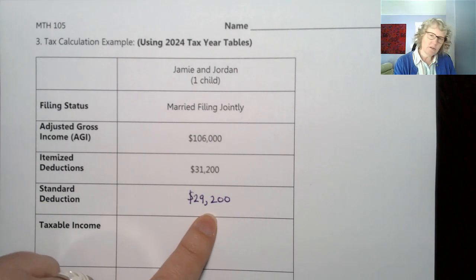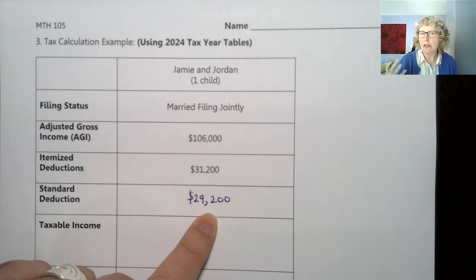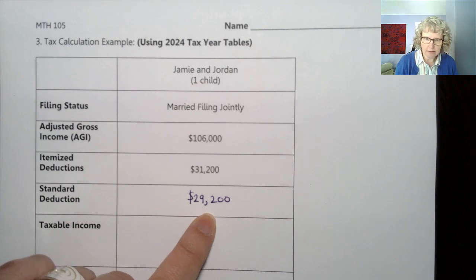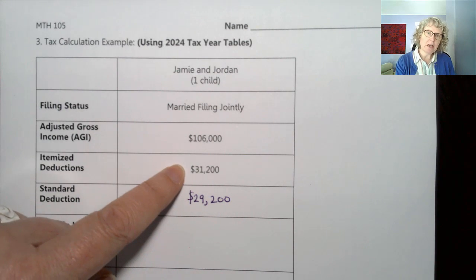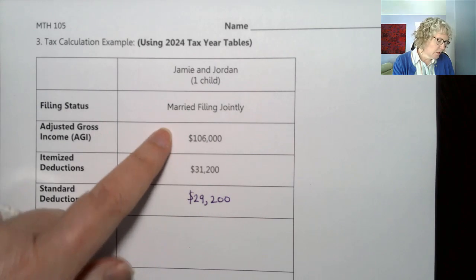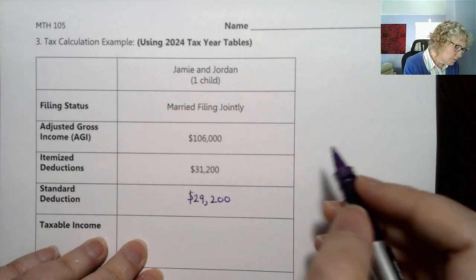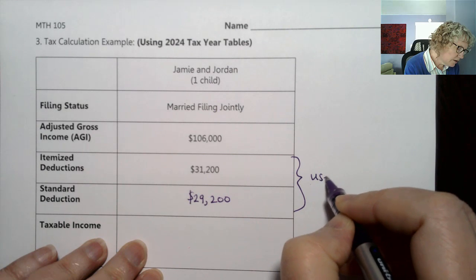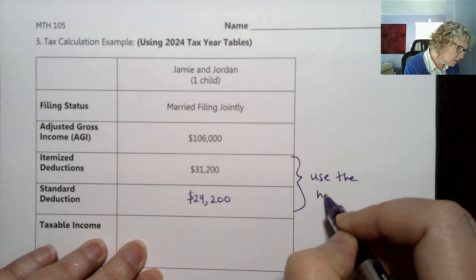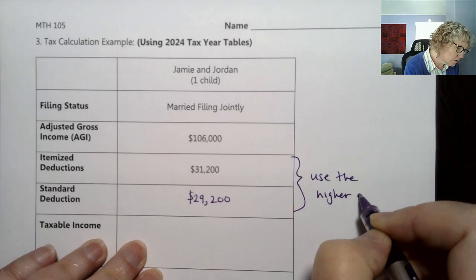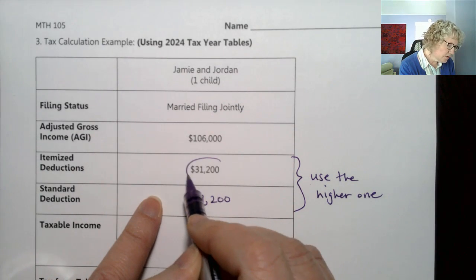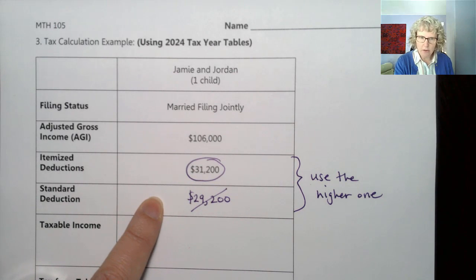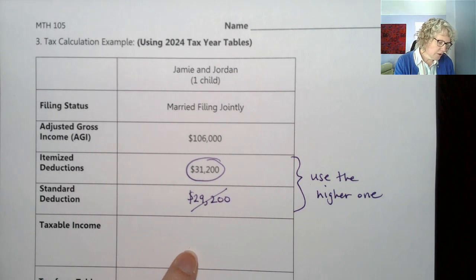Everyone gets the standard deduction no matter what — it's like a certain amount of income you can make without paying taxes on that much money. If you can itemize more than that, that's good, because you get to deduct it from your adjusted gross income. We want to use the higher one. The itemized deductions are higher, so we circle that one and cross the other out.